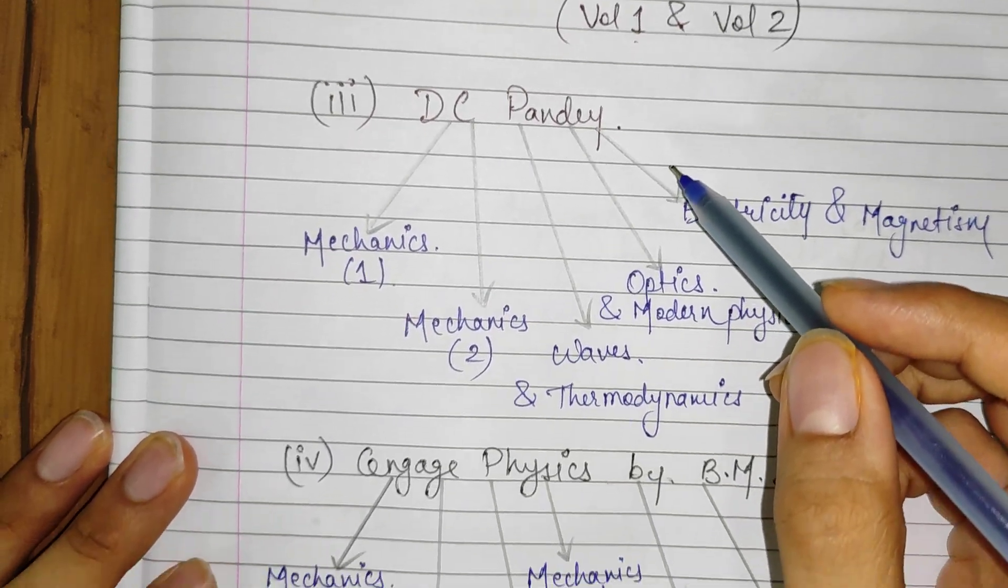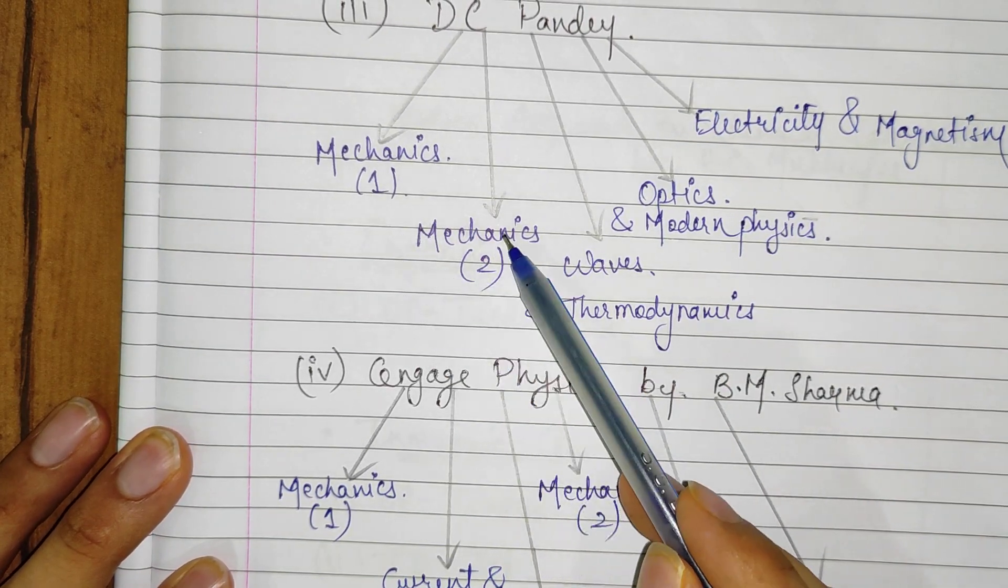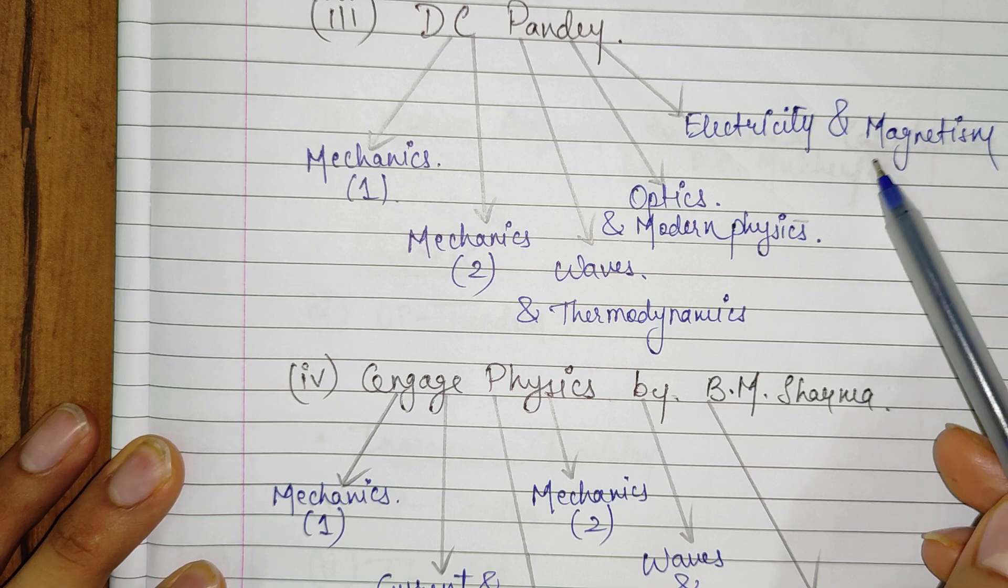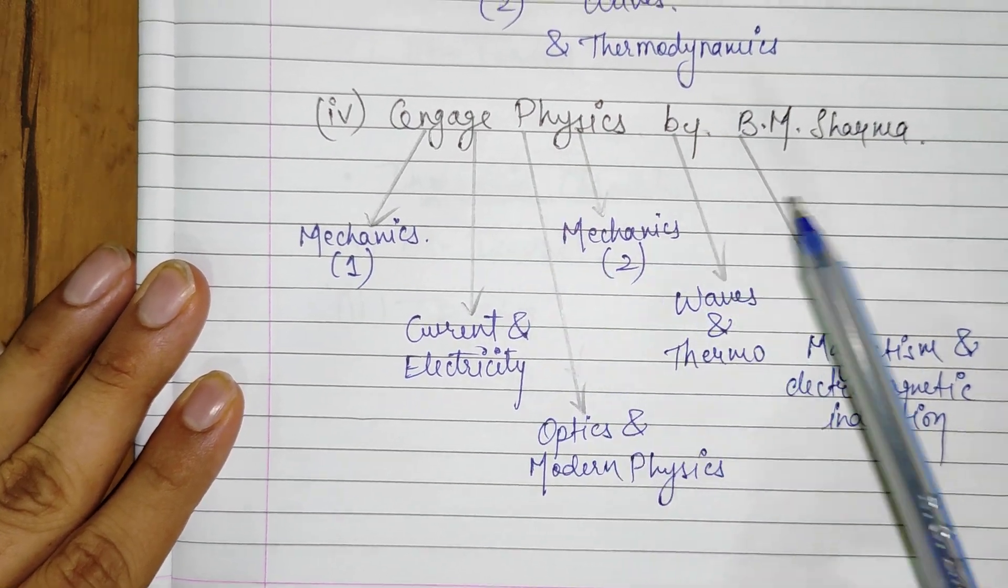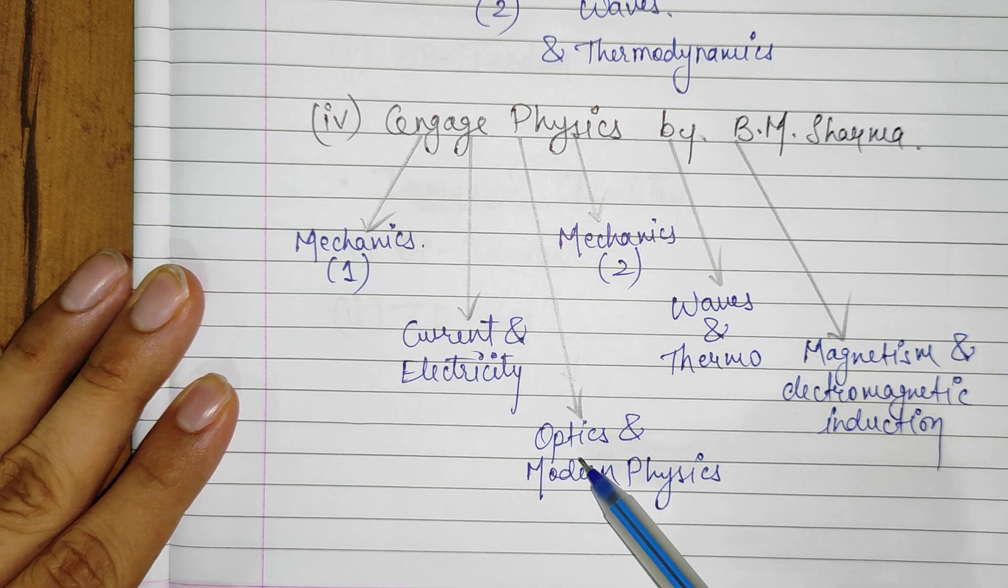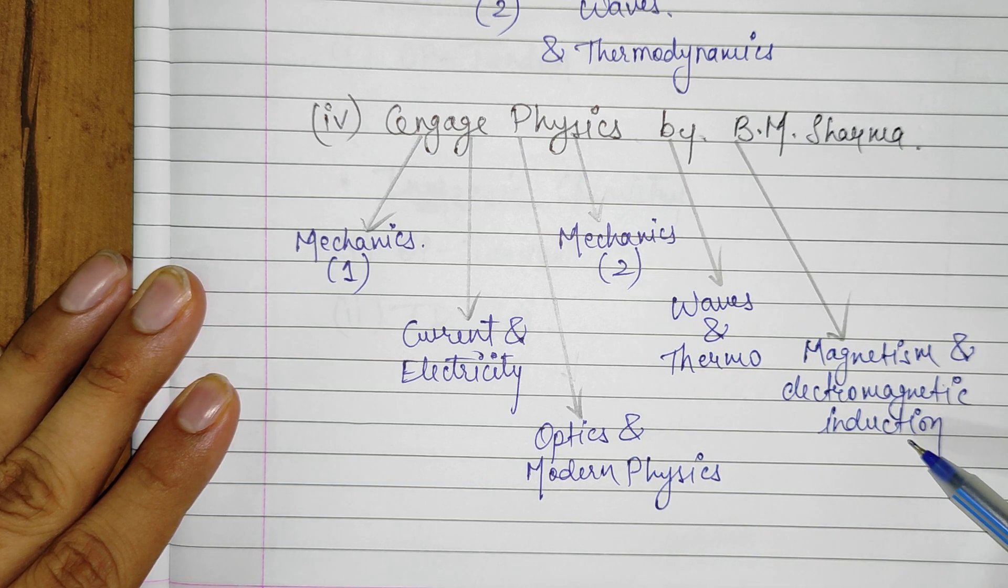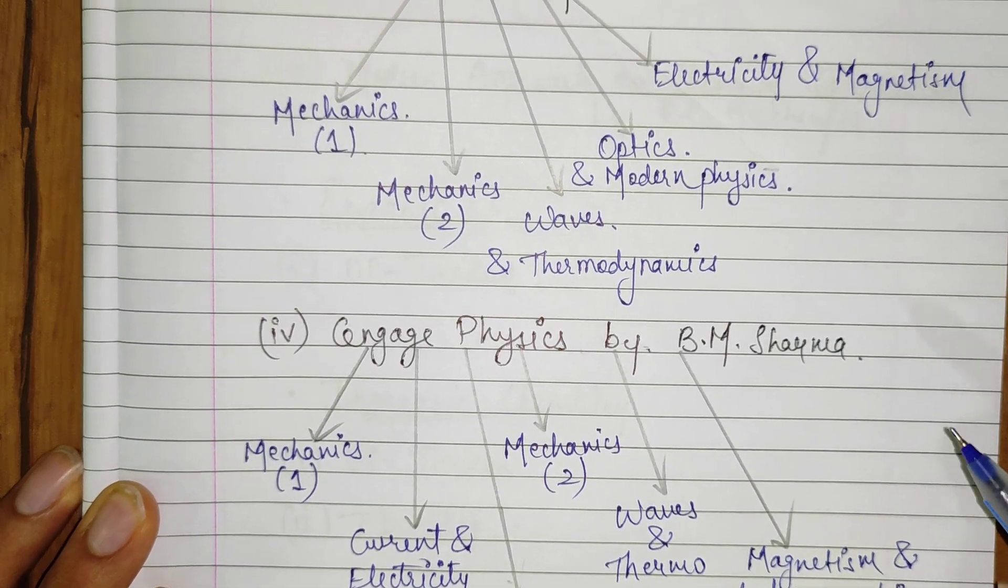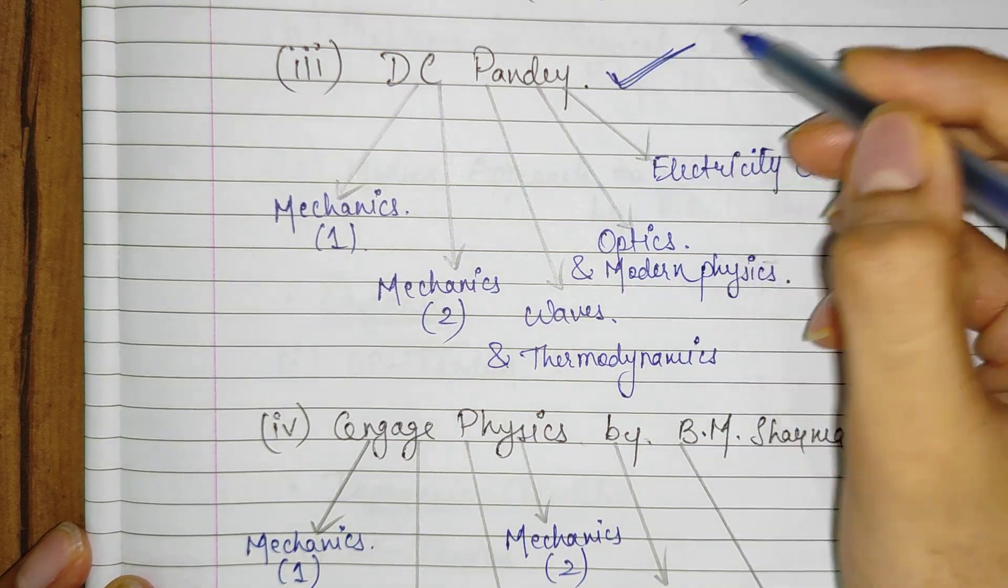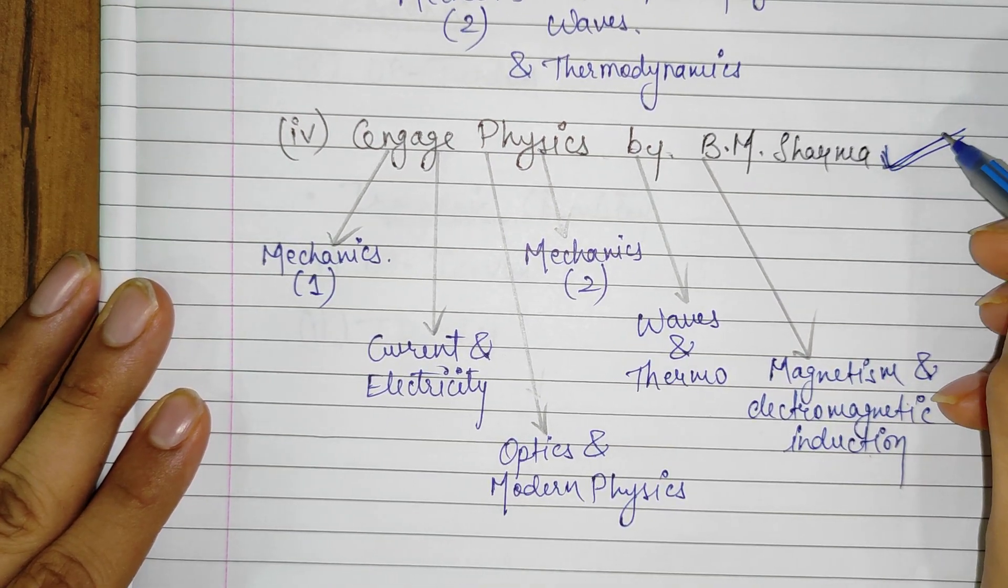Now if you are in class 11th, you can simultaneously solve either DC Pandey which is a set of 5 books: Mechanics part 1, Mechanics part 2, Waves and Thermodynamics, Optics and Modern Physics, and Electricity and Magnetism, or you could go with Cengage Physics by B.M. Sharma which is a set of 6 books: Mechanics 1, Current and Electricity, Optics and Modern Physics, Mechanics 2, Waves and Thermodynamics, and Magnetism and Electromagnetic Induction. So if your main focus is on the JEE mains then I would suggest you to go for DC Pandey. But if you are aiming for the JEE Advanced then I would recommend you to go for Cengage Physics by B.M. Sharma.